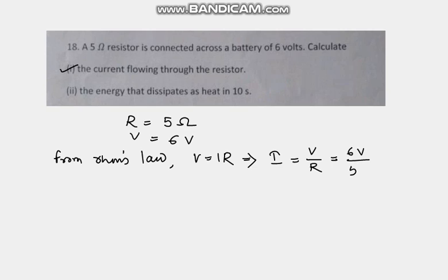So here V is given as 6 volt and resistance is given as 5 ohm, so 6 by 5 ohm, that is 1.2 ampere is the current flowing in the circuit.